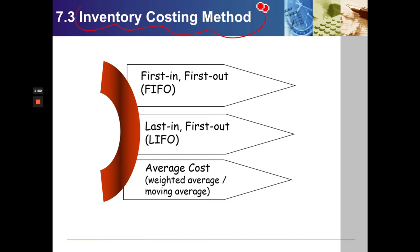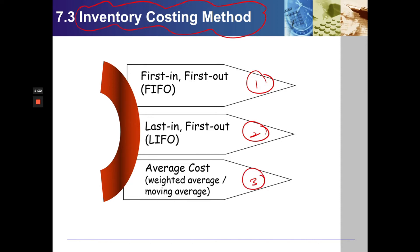There are 3 inventory costing methods. The first one is First In, First Out (FIFO). The second one is Last In, First Out (LIFO). And the third one is Average Cost, which is either Weighted Average or Moving Average.